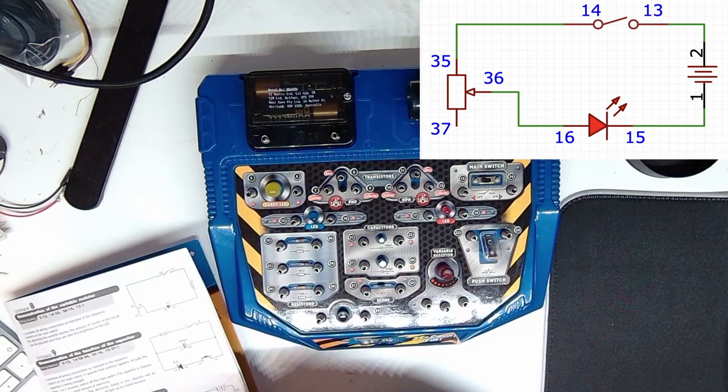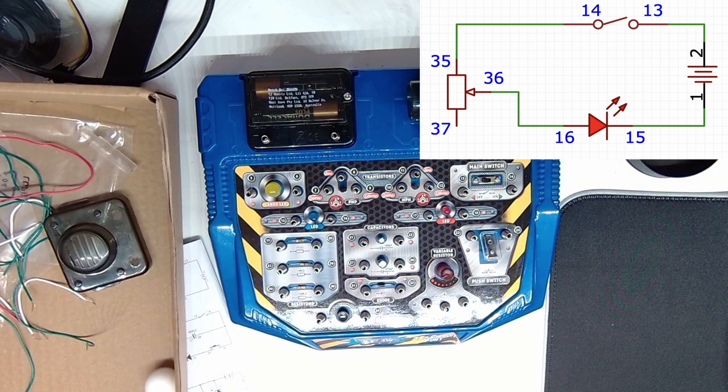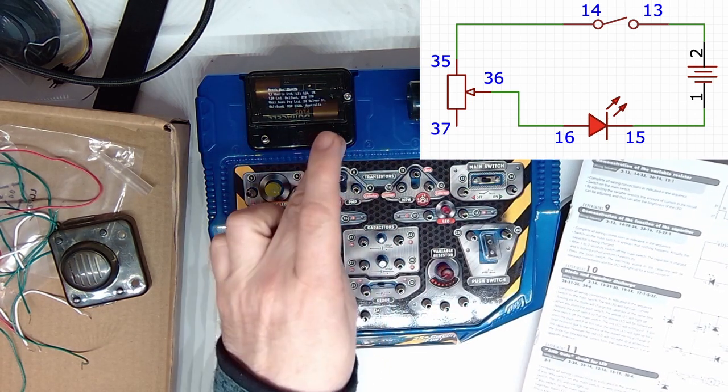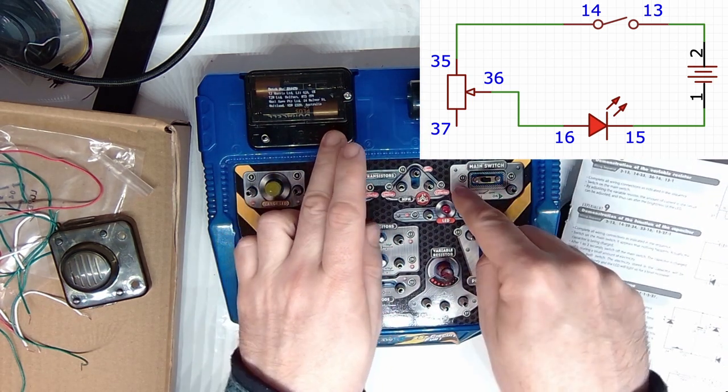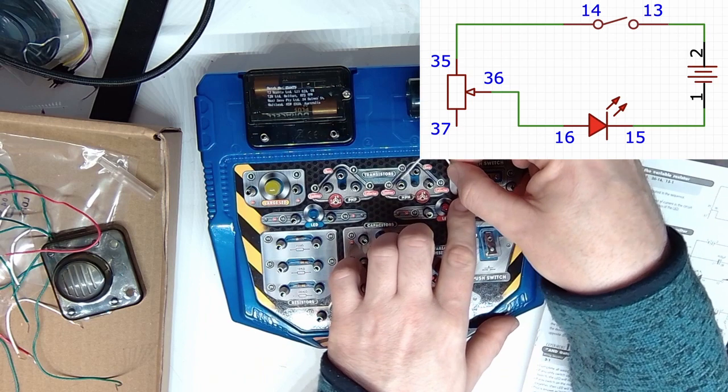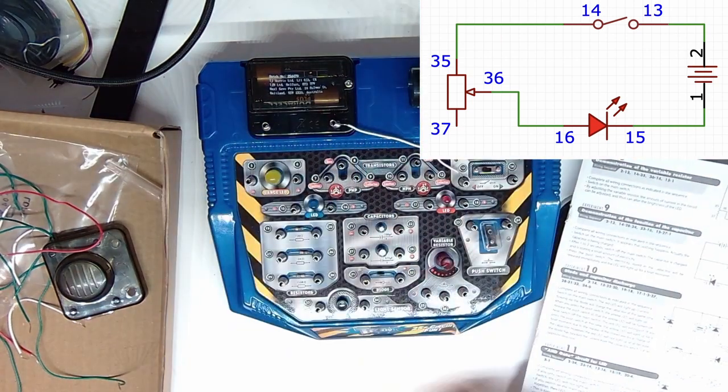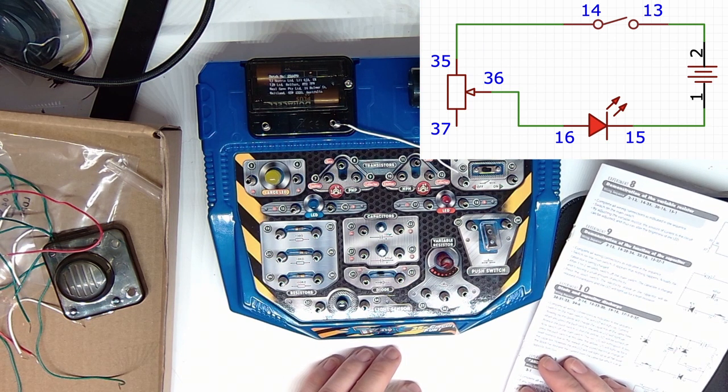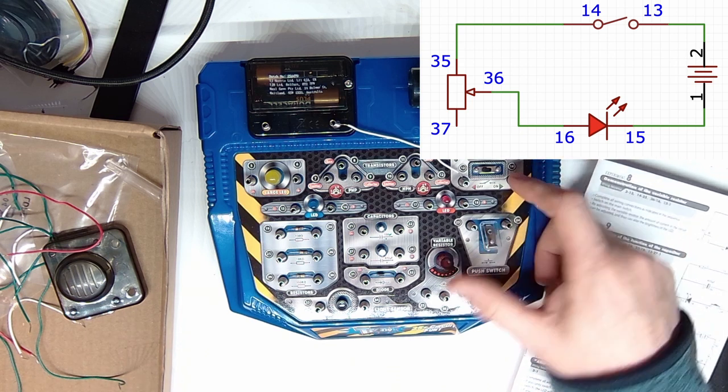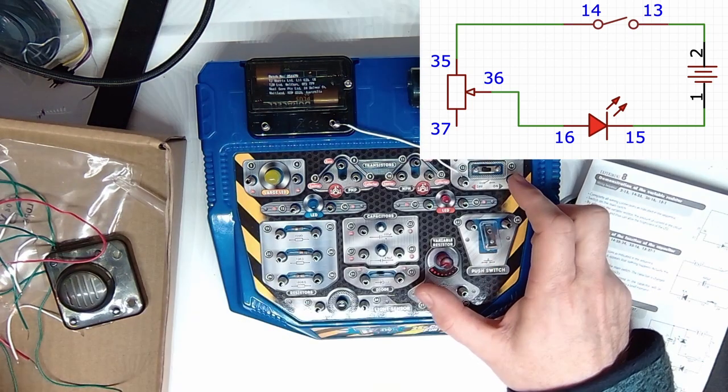Fine. Right, so we need some wires and move structures out of the way. So we need 2 to 13. 14 to 35, which is down here. Doesn't quite fit.